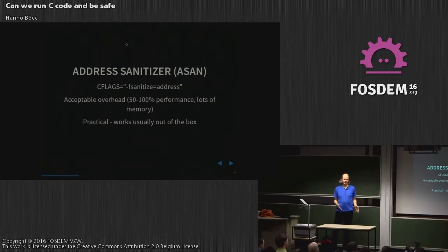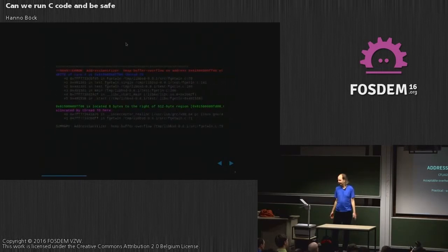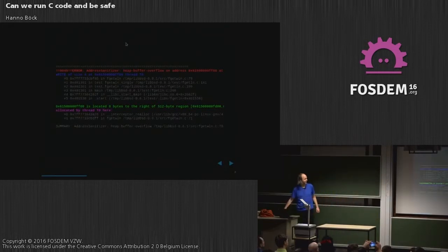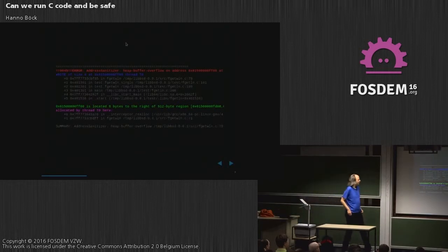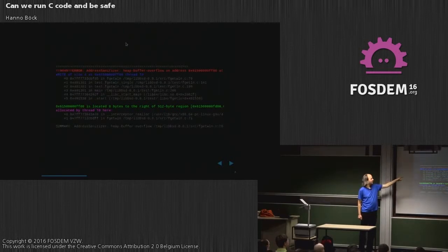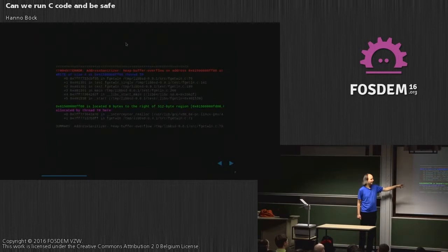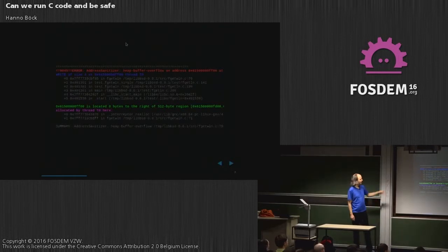The nice thing is it actually works. Most applications you can compile with it and run with it. This is how it looks if you compile an application with AddressSanitizer and something bad happens - you get one of these nice stack traces. You get a pretty detailed idea of what's going on. It says here it's a write of size 4 at some address, and you get the lines in the code where it happened, a full stack trace, and also an idea of where this memory was probably allocated. That's a real-world example from a bug in libBSD that I reported just a week ago - a classical buffer overflow.